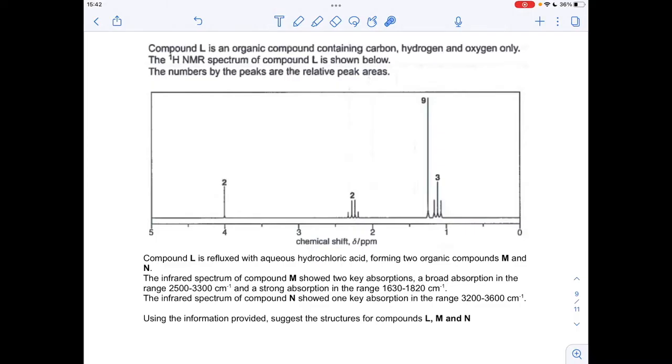So the first thing I want to do is look at the infrared information. That's going to help us establish what kind of compounds M and N are, that's going to help us work out what L must have been, and then I'm going to go to the proton NMR spectrum, work out the structure of L, and then come back to M and N and establish what they must be.